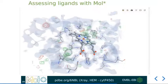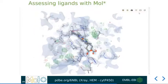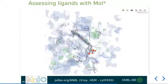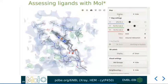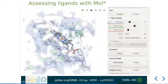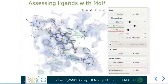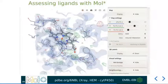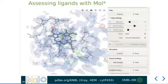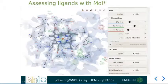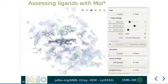From here, we can also show all the controls as they were available before with the toggle controls button. For X-ray entries like this one, the 2FO-FC and emission maps are shown by default, and you can readily inspect specific ligands for any given entry.